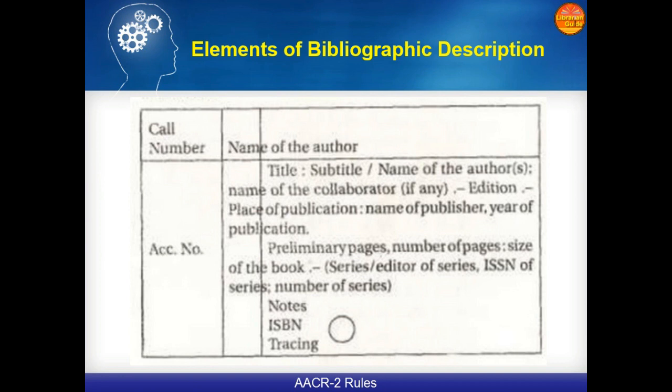The physical information starts from the second indention: preliminary pages, followed by number of pages separated by a comma, semicolon, size of the book. Then in circular brackets: series, followed by editor of series separated by a slash, comma, ISSN of series, semicolon, number of series. Then the notes area, ISBN area, standard number, and tracing. In India especially, from the fourth line in the catalogue we provide the accession number at the left side.